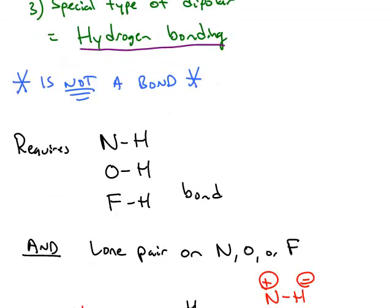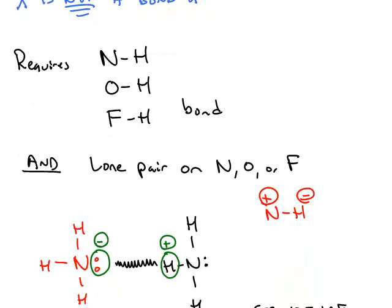Hydrogen bonding requires one of three elements: nitrogen, oxygen, or fluorine bonded directly to a hydrogen. And in addition, it also requires that the nitrogen, oxygen, or fluorine contains a lone pair.